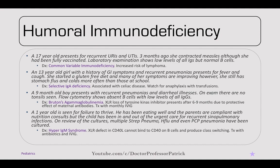A 13-year-old girl with a history of GI symptoms and recurrent pneumonias presents with fever and cough. She started a gluten-free diet and many symptoms are improving; however, she still has stomach flus and colds more often than her classmates. This is selective IgA deficiency. It's associated with celiac disease, and a key precaution is to watch for anaphylaxis with transfusions.